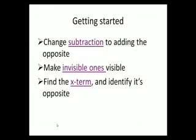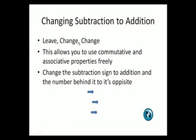Changing subtraction to adding the opposite, making the invisible ones visible, and identifying the x term and its opposite will help you get started in the problem a little quicker. So let's review changing subtraction to addition. Usually referred to as leave change change, this process allows you to use commutative and associative properties freely. You change the subtraction sign to addition and the number behind it to its opposite.